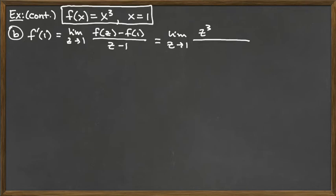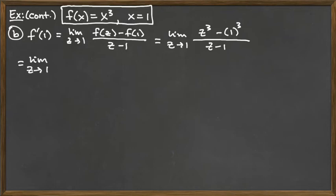To get f of 1, we simply plug in the value 1 to the function x cubed, so we would have 1 cubed. On the bottom we've got the factor z minus 1. In the other problem we had to use Pascal's Triangle to cube out the first function value, but this time we don't have to do that because our plug-in was simpler. So we're looking at the limit as z approaches 1 of z cubed minus 1 over z minus 1.